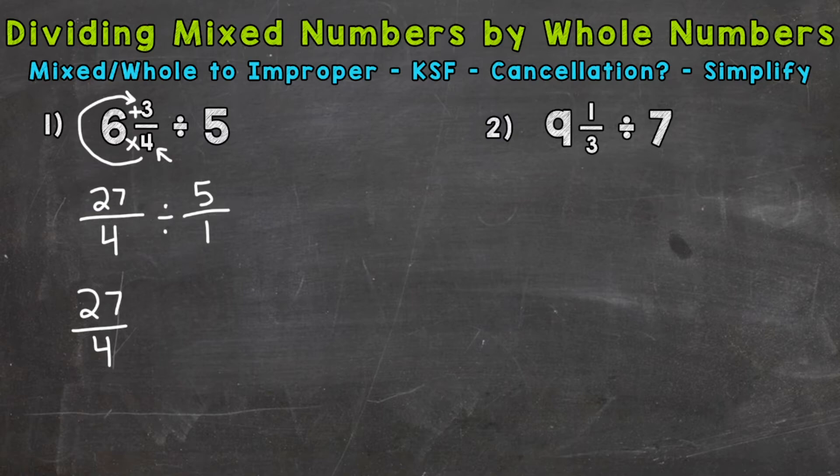We need to switch to the opposite of division, multiplication. So switch to multiplication, and then F, flip, we flip our second fraction. So the 1 is now our numerator, and the 5 is now our denominator. So 1 over 5.